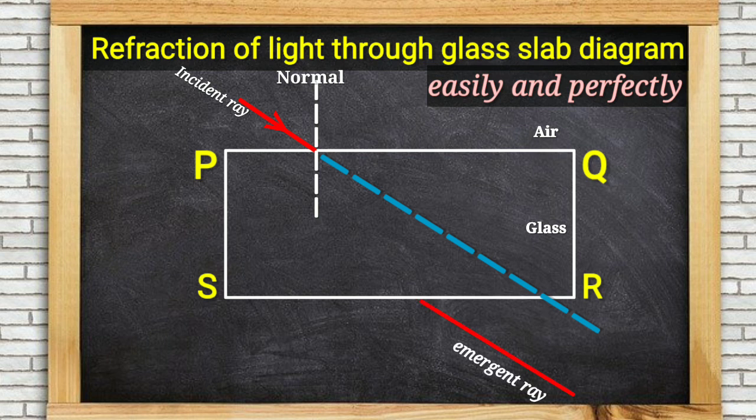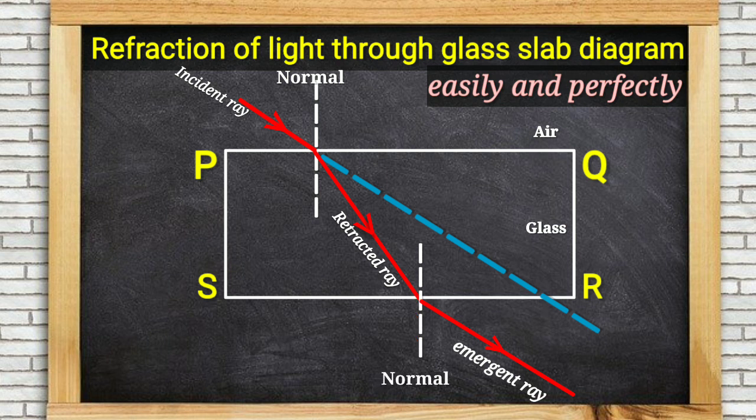Now we can draw a refracted ray. Let us draw one more normal at a point where refracted ray leaves the glass surface. Now mark angles: angle between normal and incident ray, angle i; angle between normal and refracted ray, angle r.